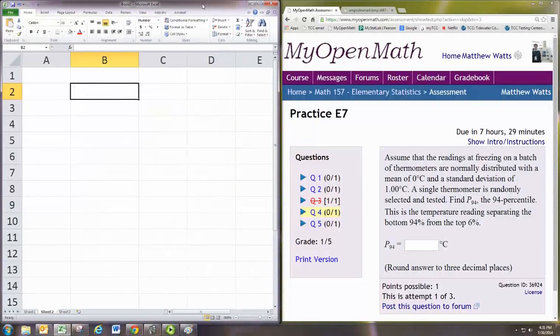In this video, we'll see how to do practice problem 4 from experience 7. Assume that the readings at freezing on a batch of thermometers are normally distributed with a mean of 0 degrees Celsius and a standard deviation of 1 degree Celsius. A single thermometer is randomly selected and tested. Find the 94th percentile. This is the temperature separating the bottom 94% from the top 6%.